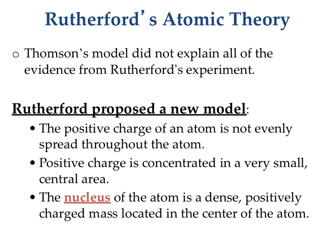Thomson's model got refuted and didn't explain all the evidence that Rutherford came up with. Rutherford figured out that the positive charge of the atom is not evenly spread throughout — it's actually concentrated in a very, very small central part of the atom, which we call the nucleus. The nucleus is positively charged, in the middle, and very dense. We had to modify our model of the atom to what Rutherford called the nuclear atom, where we have the positively charged nucleus in the middle and little negative electrons rotating on the outside.